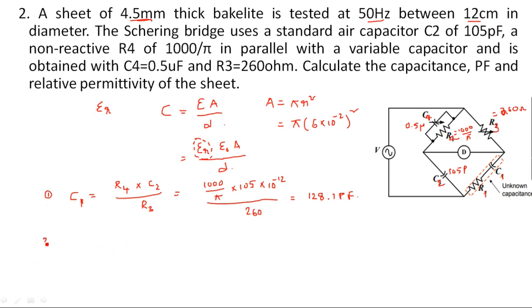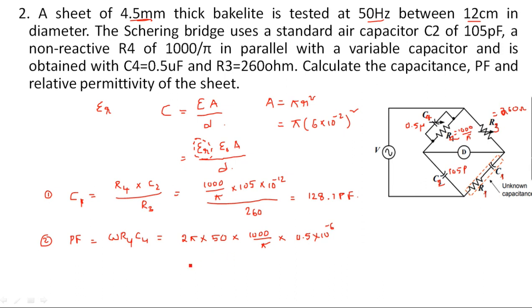The second part asks you to calculate the power factor. Power factor equals ω·R4·C4, which is 2π × 50 × (1000/π) × 0.5 × 10⁻⁶. If you simplify this, you get 0.05 as the dissipation factor, which you can also call the power factor.